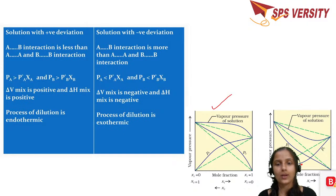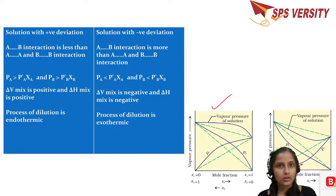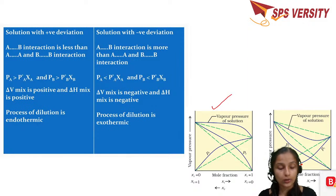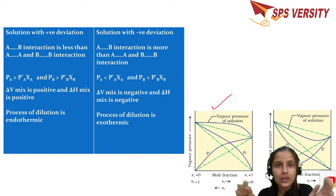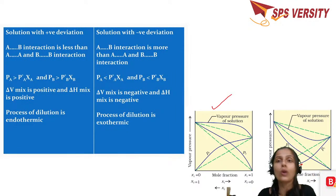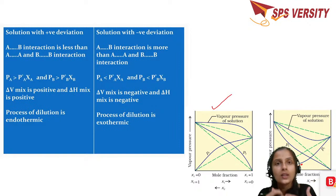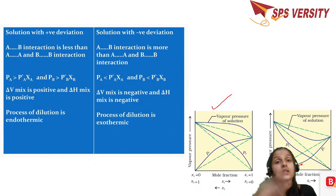In negative deviation, mixing 10 ml and 10 ml gives 19 ml instead of 20 ml, so delta V mixing is negative — volume has decreased. This happens because A–B interactions after mixing are stronger than the individual A–A and B–B interactions before mixing. The molecules come closer together, needing less space. Since the interaction happens without needing extra energy, heat is released — the mixing is exothermic.